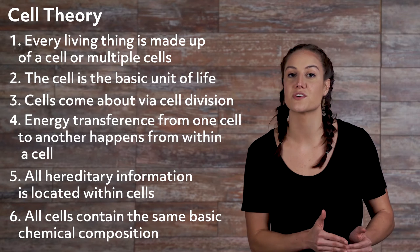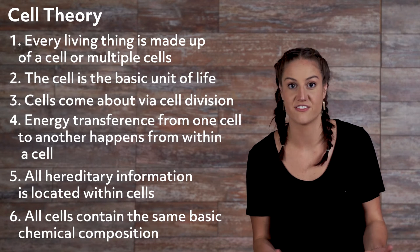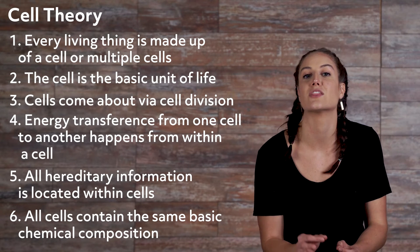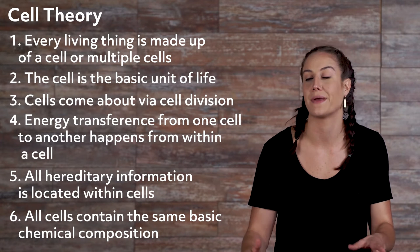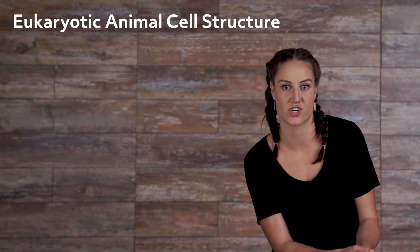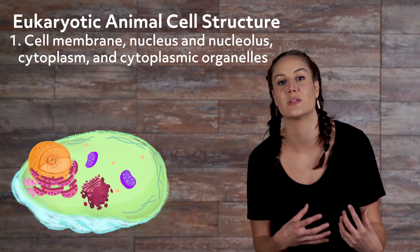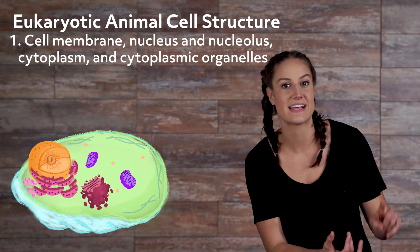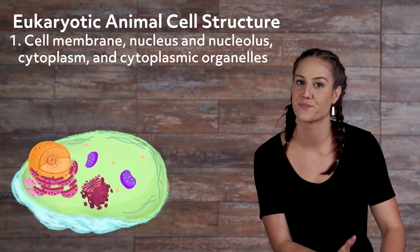Understanding the structure of cells, the most basic unit of life, is crucial to understanding the rest of an organism's makeup and function. In this video, we will look at the main components of eukaryotic animal cell structure: cell membrane, nucleus and nucleolus, cytoplasm, and cytoplasmic organelles.